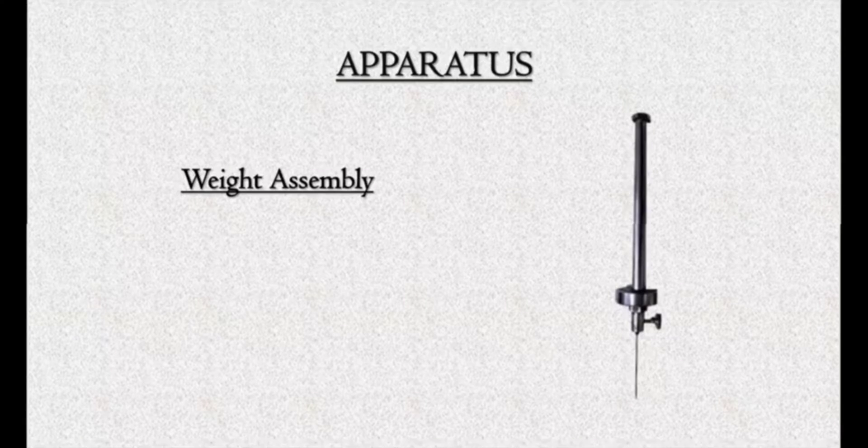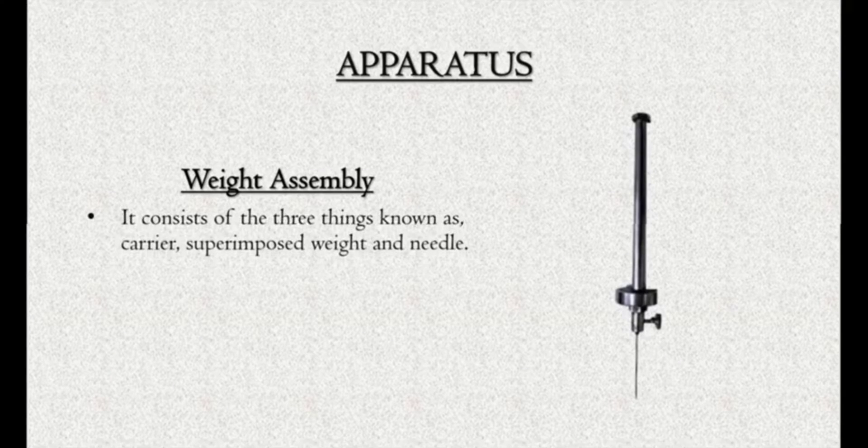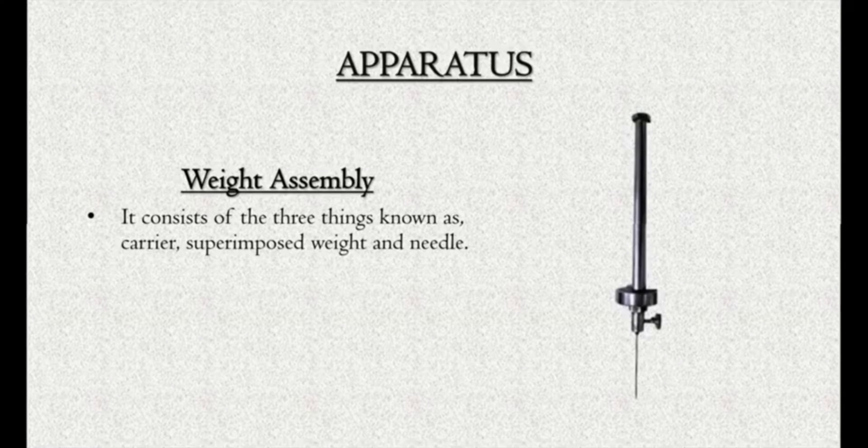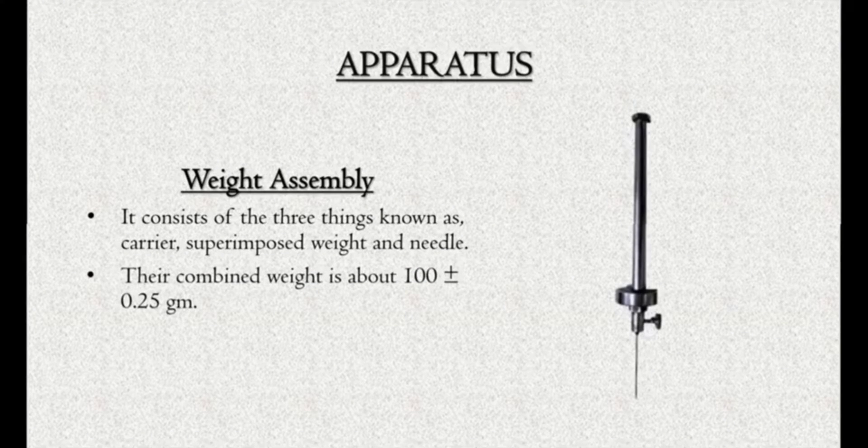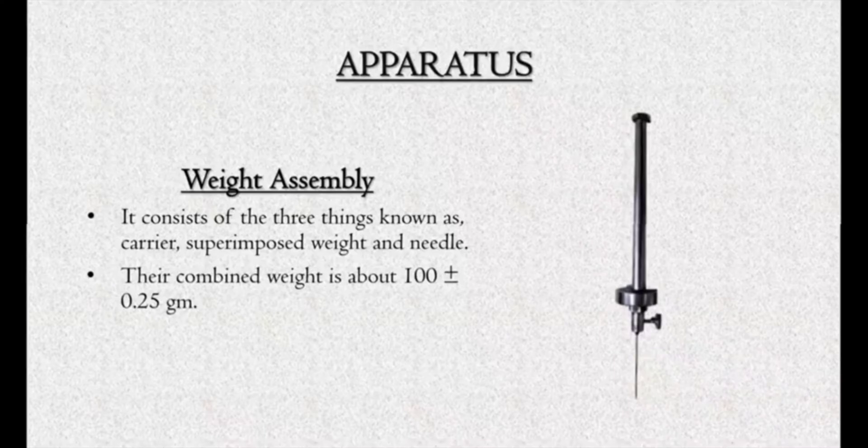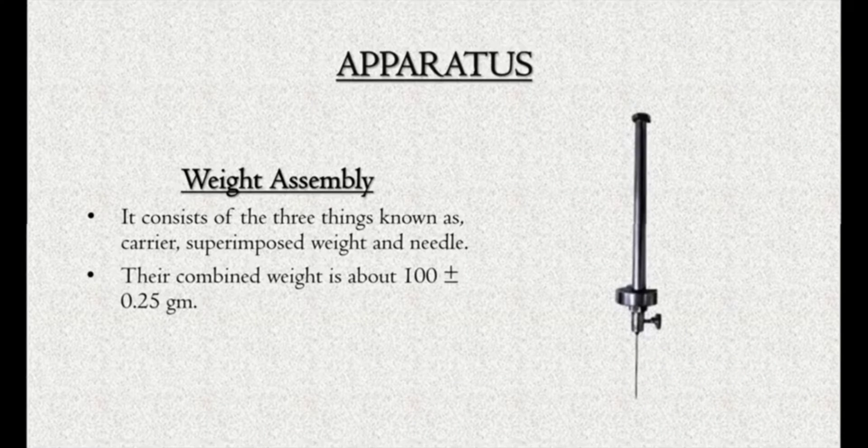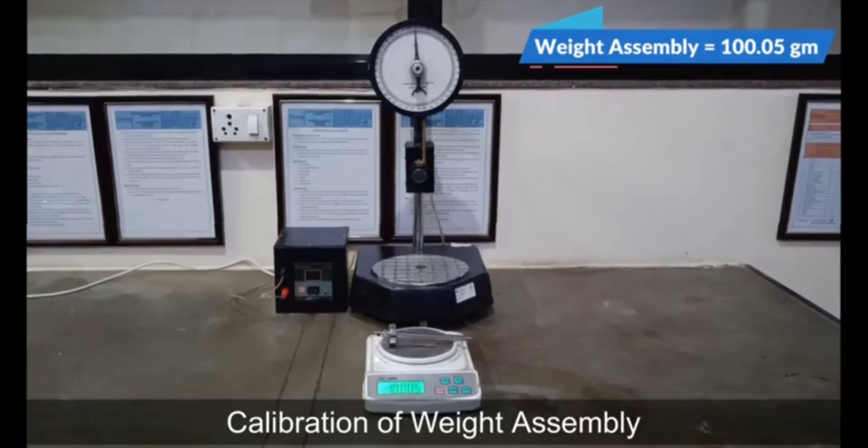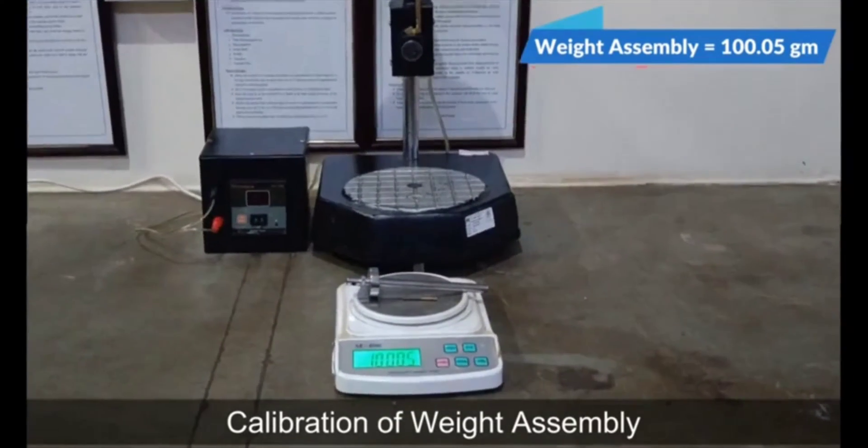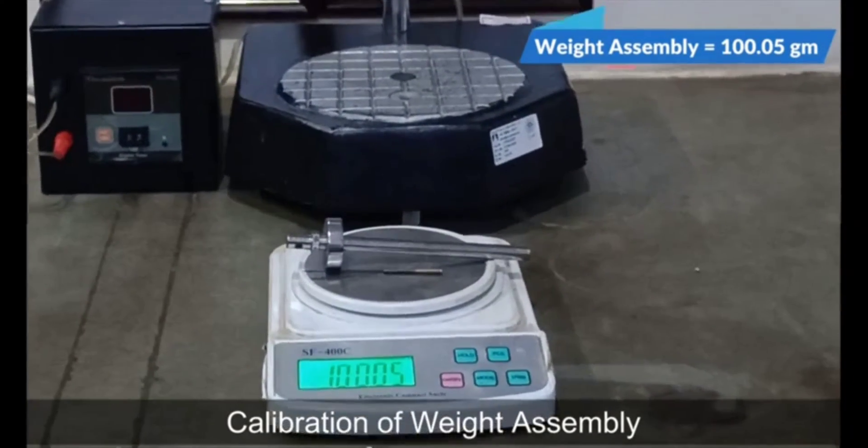Weight assembly: It consists of three things known as carrier, superimpose weight, and needle. Their combined weight is about 100 plus or minus 0.25 grams. Calibration of weight assembly: 100.05 grams.